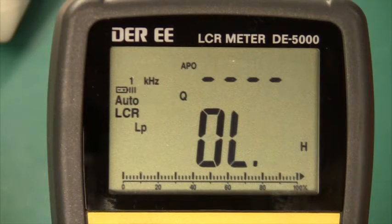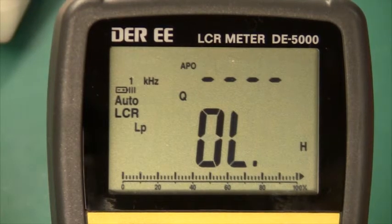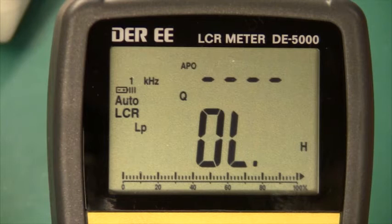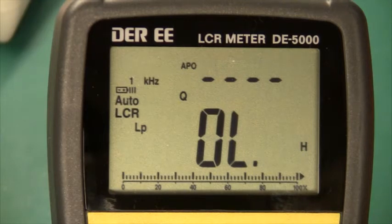And then it has a separate button for measuring the parasitics. It can measure deviation, Q, equivalent series resistance and phase. So this is basically different ways of displaying the same parameter.